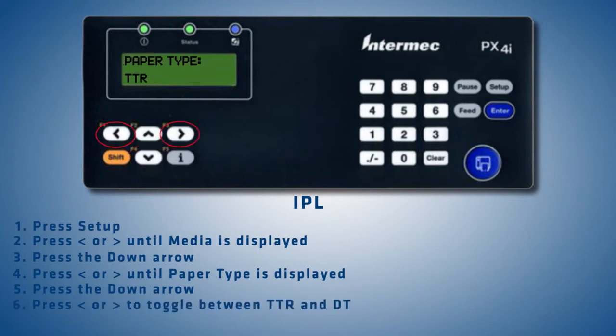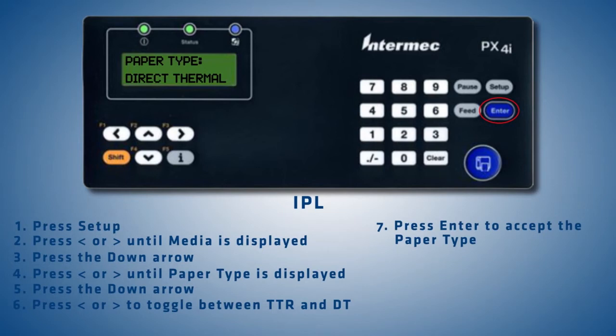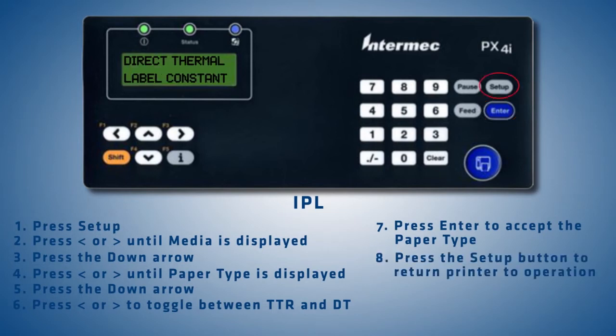Press the left or right arrow buttons until the Paper Type menu is displayed. Press the down arrow button to enter the Paper Type menu. Press the left or right arrow buttons to toggle between Thermal Transfer, TTR, and Direct Thermal, DT. When the desired Paper Type is displayed, press the Enter button. Press the Setup button to return the printer to operation.